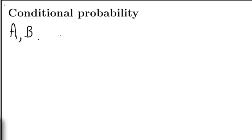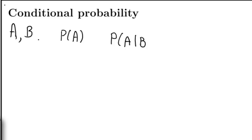This lecture is about conditional probability. Let's say that I have an experiment for which I have defined two events, A and B. The probability that A is true is denoted as P(A). However, it might be the case that I know that B is true. Knowing that B is true may not tell me if A is true or false, but it might change the probability of A being true. This conditional probability is denoted P(A|B), pronounced the probability of A given that B is true.